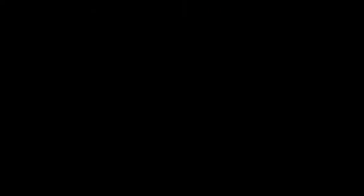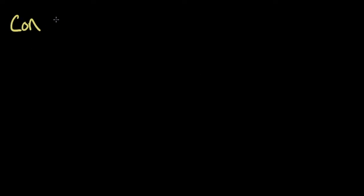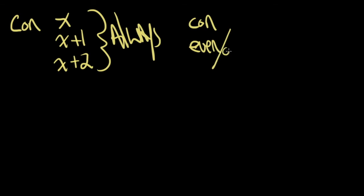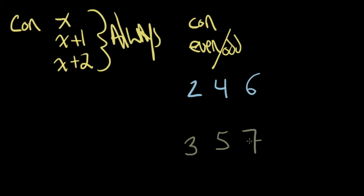One little hint about where teachers can get you: consecutive problems are always going to be x, x+1, x+2. Always. But you're going to see something called consecutive even or odd. Consecutive even numbers would be like 2, 4, and 6. Consecutive odd numbers would be things like 3, 5, and 7. Either way, you get the same algebra. If the first number is x, the next even number would be x+2, and the next is x+4. Same for consecutive odds: x, x+2, and x+4.